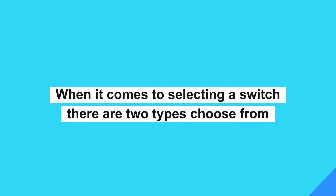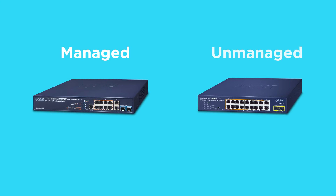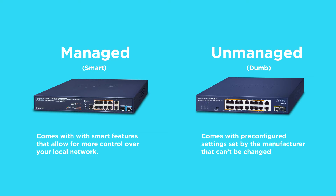When it comes to selecting a switch, there are two types to choose from: a managed switch and an unmanaged switch. The main difference is that an unmanaged switch, sometimes referred to as a dumb switch, is pre-configured with settings by the manufacturer that can't be changed. Managed switches on the other hand come with smart features enabling the user to customise, tweak, and monitor their switch and even devices connected to it with more freedom and flexibility.